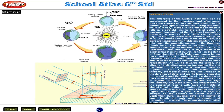During this time at the North Pole, the days are longer and the nights are shorter, while the opposite occurs in the southern hemisphere. The maximum inclination of the southern hemisphere towards the Sun occurs on December 22nd, and the Sun rays reach their southernmost point at 23.5 degrees south. Hence, on the 22nd of December, the South Pole experiences longer days and shorter nights. These two extreme northernmost and southernmost positions are known as the Summer Solstice and Winter Solstice, respectively.